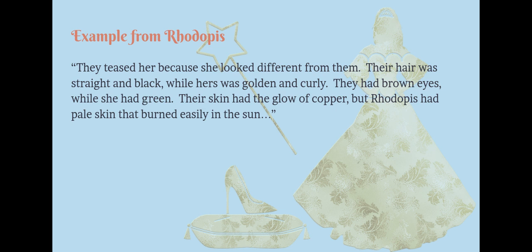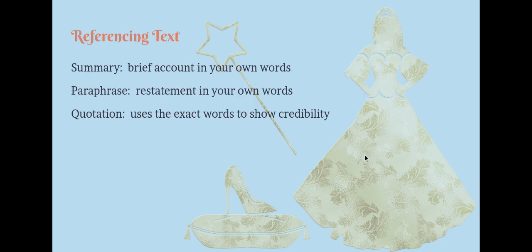I want you to open the document that says 'Referencing Text the Correct Way.' At the top we have the definitions of summary, paraphrase, and quotation, just as we have on the board. We are going to read the following excerpt from the end of Cinderella. If you are writing an explanation of how the story ends, how would you do so using each of the options above? Write your answers on the lines provided.